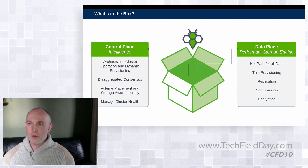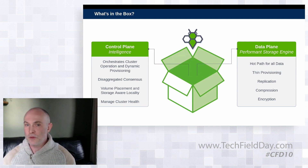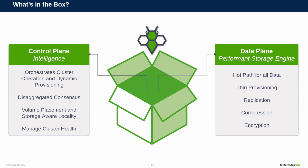What's in the box? Philosophically, StorageOS is composed of two pieces, both running on all nodes. First, the control plane — the intelligence, the brains of the operation — is responsible for all aspects of cluster operation: dynamic provisioning, volume placement, cluster health, and the issue of disaggregated consensus. Critically, no data passes through the control plane; it's purely orchestration. Second, the engine is the data plane — the hot path through which all data begins its journey on disk, traverses the network, and arrives in the container. All data services — thin provisioning, replication, compression, encryption — are handled exclusively by the data plane.